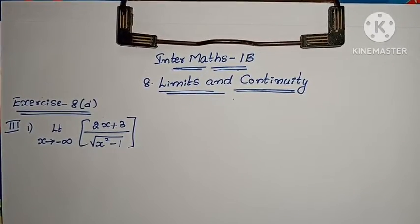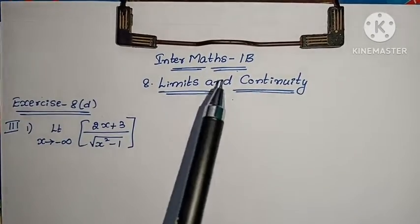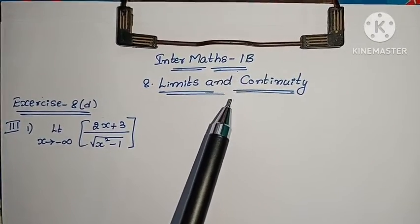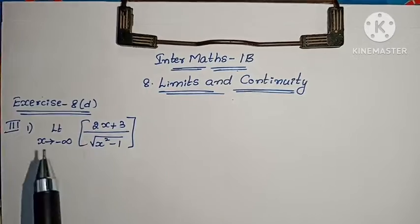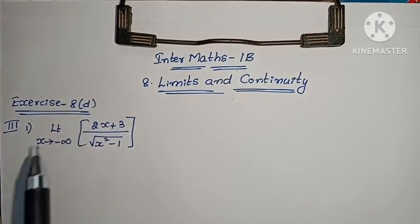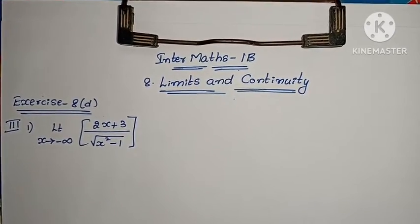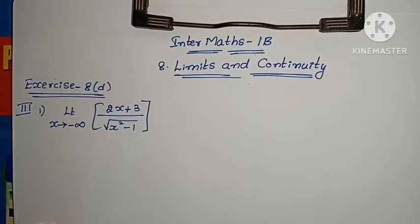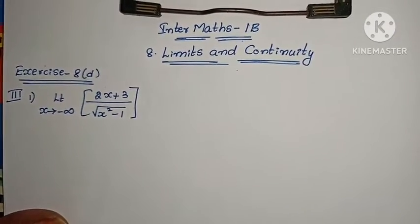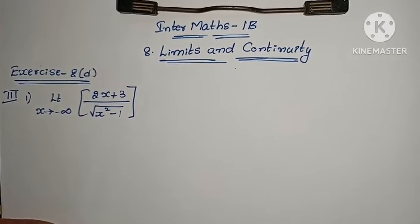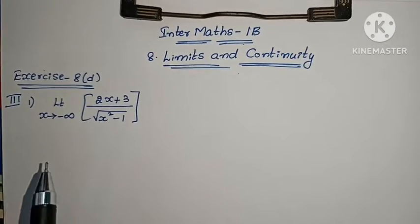Hi, welcome to Pernika Maths. It is Maths 1, Vimma 8th chapter, Limits and Continuity. In the previous video (X is 8D), the 2nd Roman problems were completed. In this video, we will discuss the 3rd Roman problems.